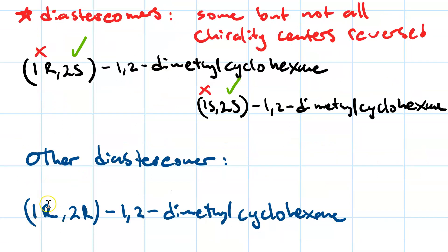So, we'd keep carbon number one at R, and then we'd change carbon number two to R to make the other diastereomer. It would be 1R, 2R, 1,2-dimethyl cyclohexane. How to draw this?